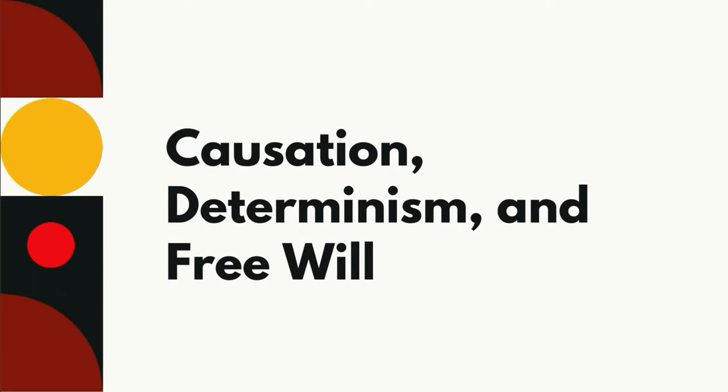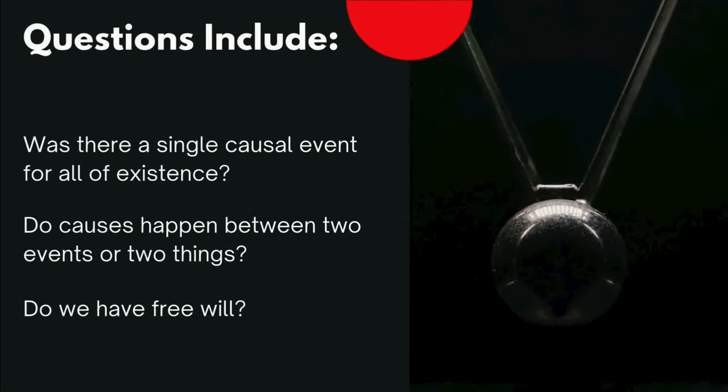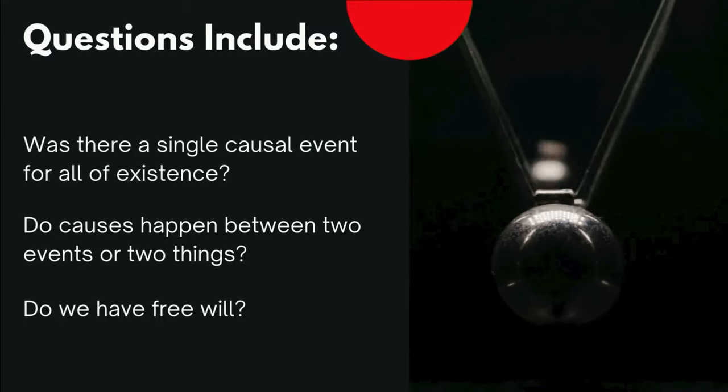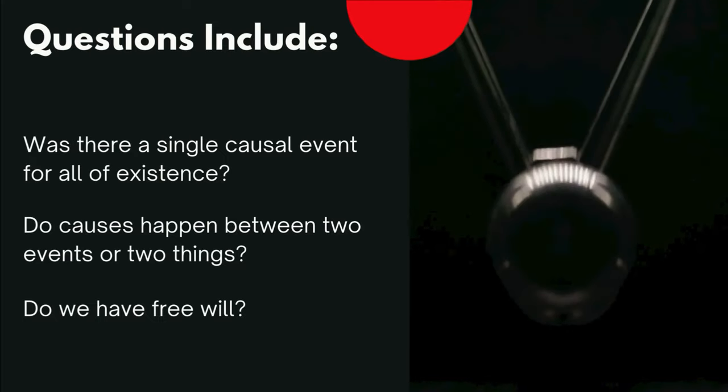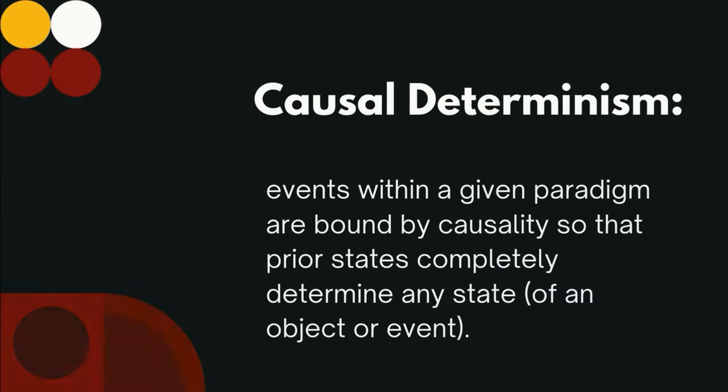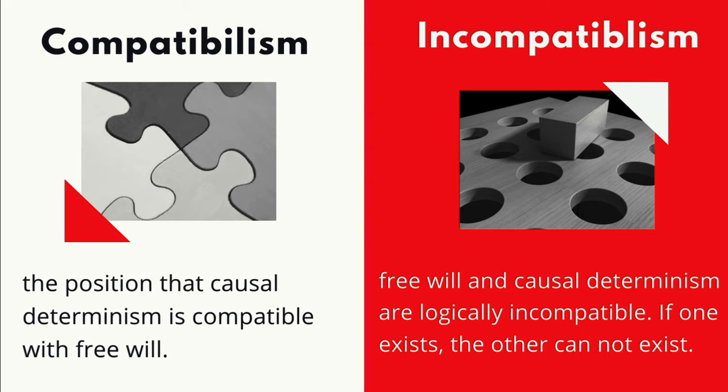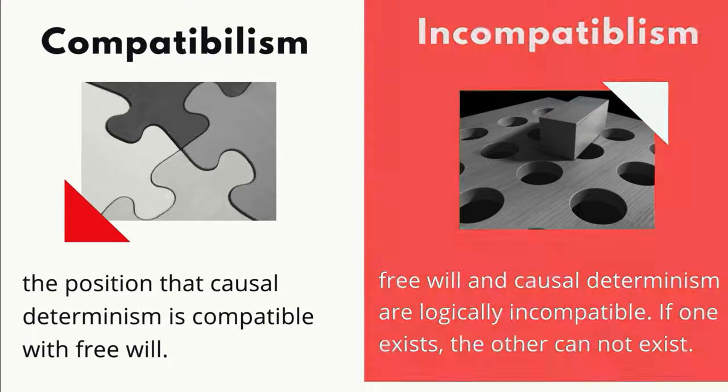Metaphysics also deals with causation, determinism, and free will. Was there a single causal event for all of existence? Do causes happen between two events, like a boat hitting an iceberg and sinking, or just two entities or things, like the boat and the iceberg? If things are all caused by previous factors, how can we have free will to make our own choices? Causal determinism suggests that events within a given paradigm are bound by causality, so that prior states completely determine any state of an object or event. Simply put, the state of the universe right now determines what happens next regardless of our will. Is it possible for us to have free will despite causal determinism? This is what is called compatibilism. Or is free will fully an illusion, a stance called incompatibilism?